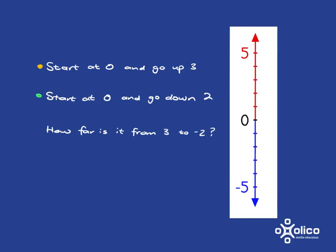If I ask you to start at 0 and go up by 3 steps, where do you end up? 1, 2, 3, you end up over here at 3, which is the number 3 on the number line. So starting at 0 and walking up 3 steps ends you up at number 3 on the number line.